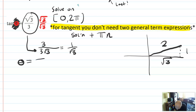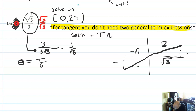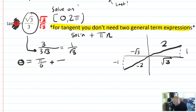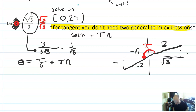I could look for multiple solutions — tangent is also positive in quadrant 3, where I'd have negative 1 and negative root 3, giving angle 7π over 6. But I don't need it. Why not? Because I just write theta equals π over 6 plus πn. Those two candidate tangent solutions are always π units apart, so don't write two solutions when you can write one — it makes your life a lot easier.